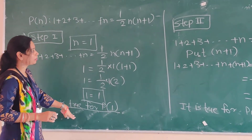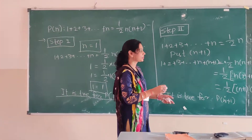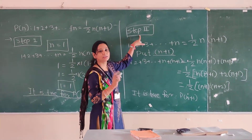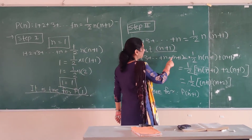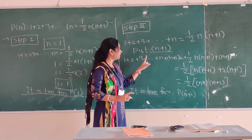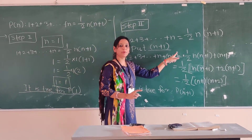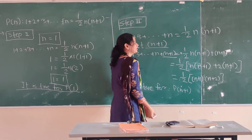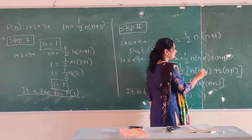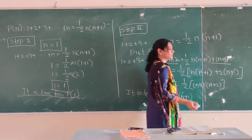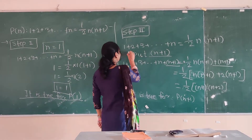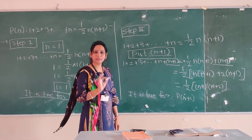Now as it is true for P(1), we go to step 2 where we put n plus 1 at both sides. So we are adding (n+1) to both sides: 1 plus 2 plus 3 plus ... plus n plus (n+1) equals 1/2 times n times (n+1) plus (n+1). This is what we have added.